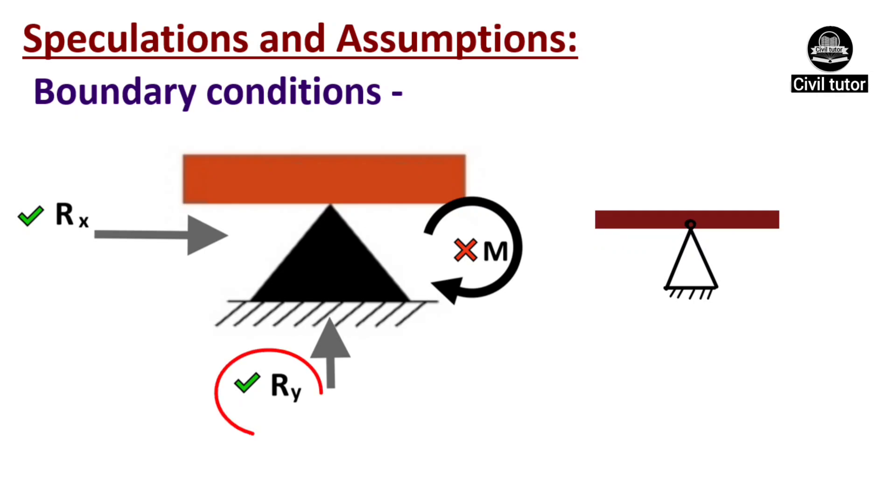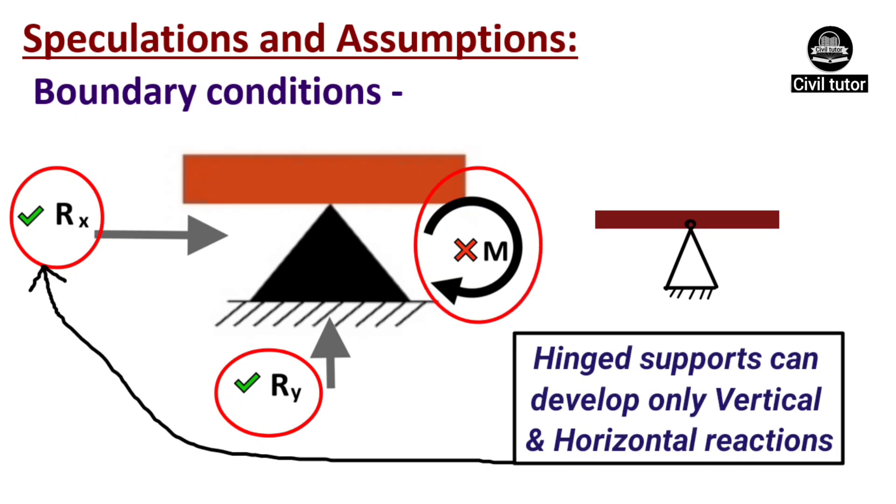In such cases, the support can develop the required resisting force in any direction and not the resisting moment. Hence hinged supports can develop both the vertical as well as the horizontal reactions but not any resisting moments.